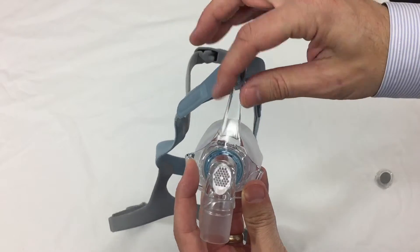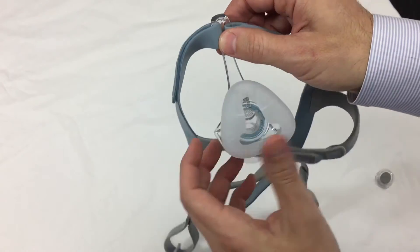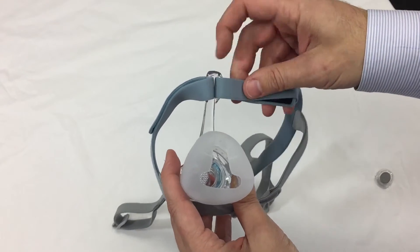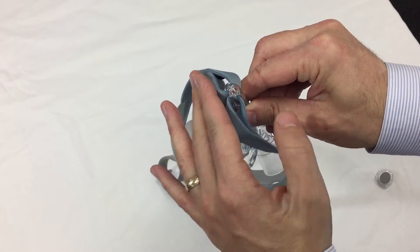And this bar here is a thinner profile also, and it's pliable, so it won't get in the way of your line of sight. And your forehead will rest right against the top right there, against this very soft headgear.